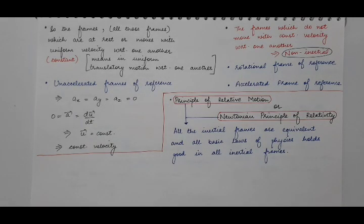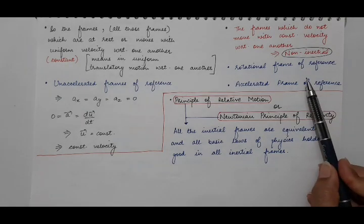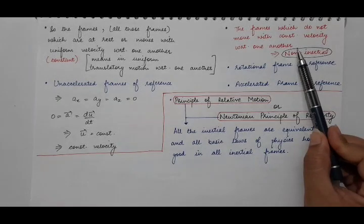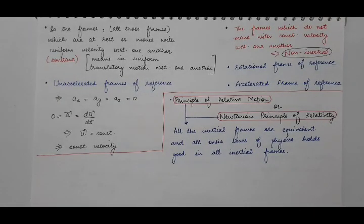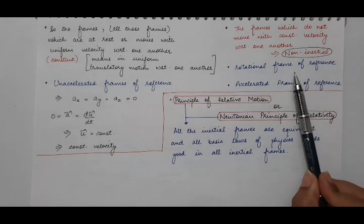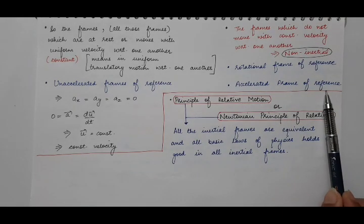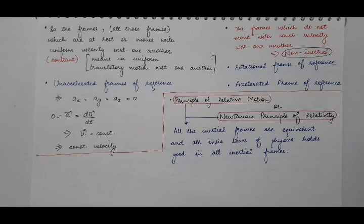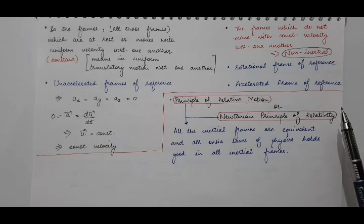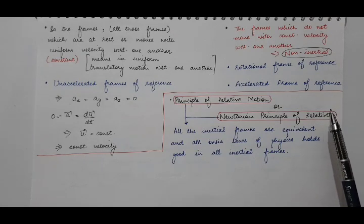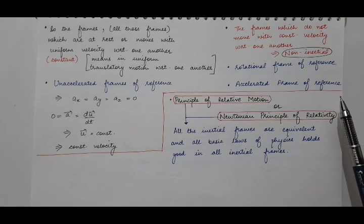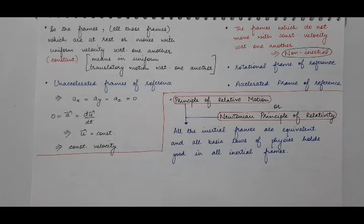If velocity is constant, then its time derivative dv/dt — the acceleration — will be zero. Frames which are not at rest or do not move with uniform velocity with respect to one another are known as non-inertial frames. Non-inertial frames are accelerated frames of reference, where one frame is accelerating with respect to another. Also, if one frame is rotating with respect to another frame, that is also known as a non-inertial frame.